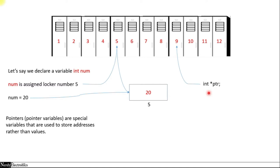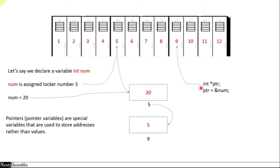Let's say the pointer is given the location 9. Now we write ptr equals to ampersand num — ampersand num means the address of num. The address of num is 5, so 5 gets stored in ptr at location 9. So whenever we print the value of location 9, we will get 5, and from location 5 we get 20.